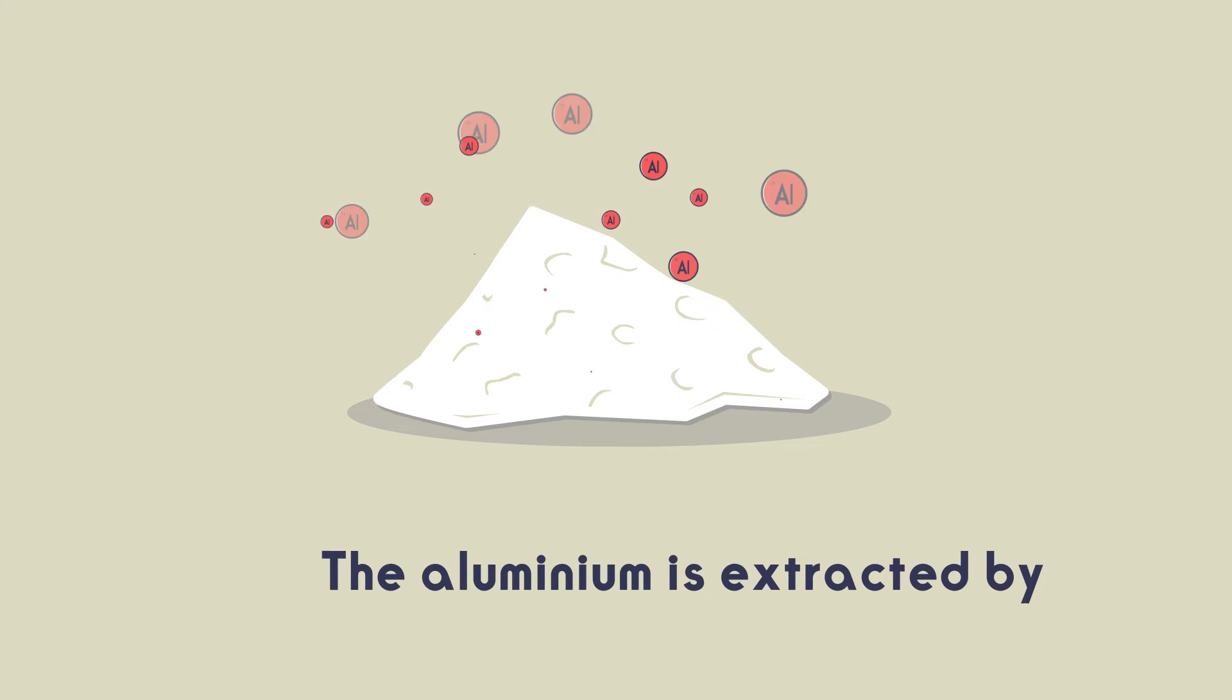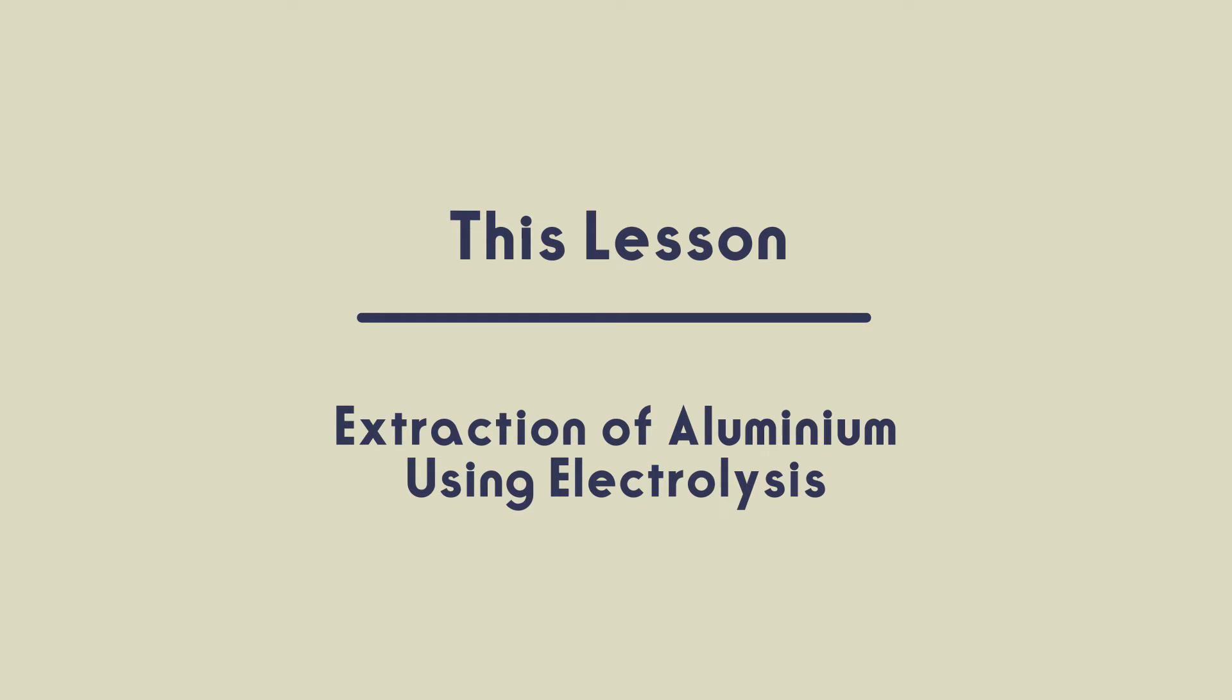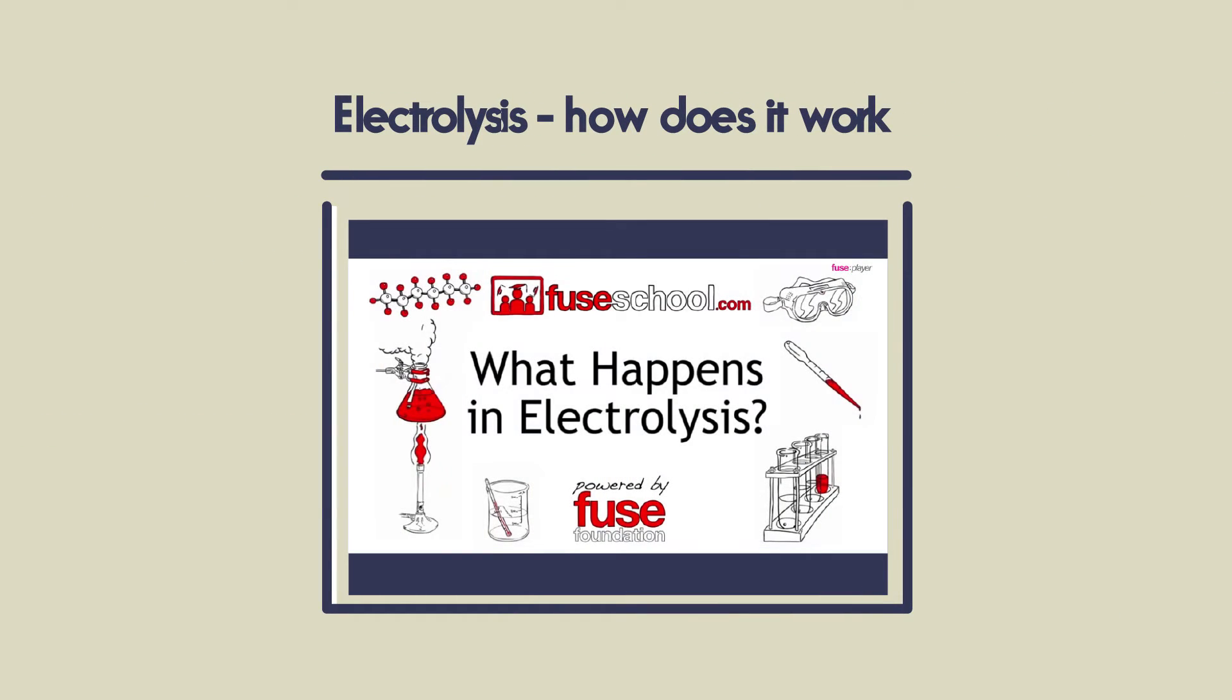The aluminium is extracted by electrolysis. In this video, we are going to look at how aluminium is extracted using electrolysis. You should already know how electrolysis works. If you have forgotten, watch our video on electrolysis to refresh your memory.